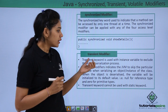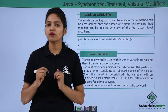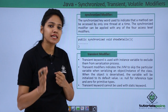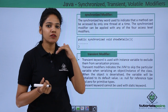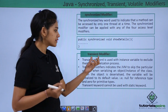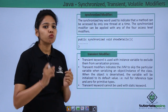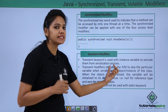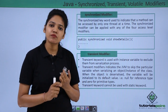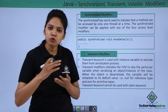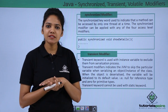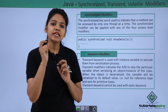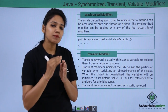The next one is the transient modifier. Transient modifier is a keyword used to define instance variables — variables that are declared outside the method but within the class. The role of the transient keyword is to exclude those variables from the serialization process. Serialization is where the object state of a variable is stored in a stream whenever you create a variable.